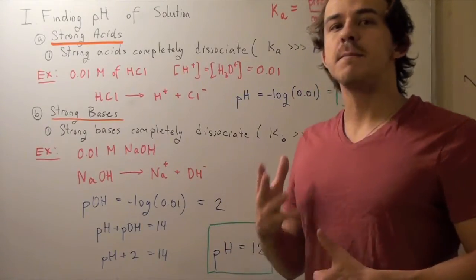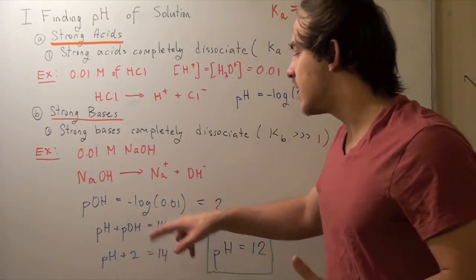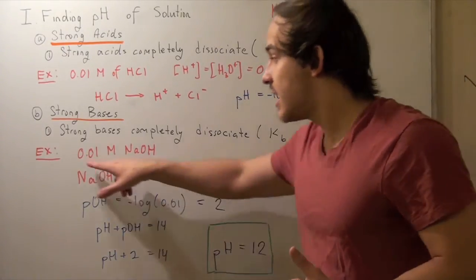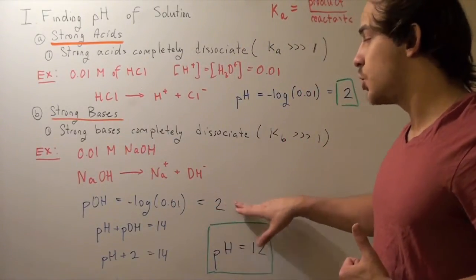Well, we must first find the pOH. To find the pOH, we simply use the formula negative log of the concentration of hydroxide, which in this case is 0.01 molar. Plug that in and we get 2.